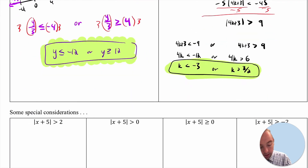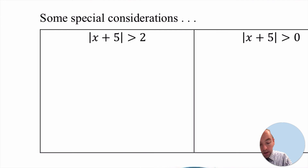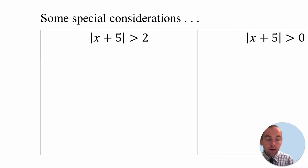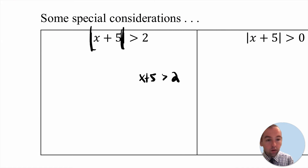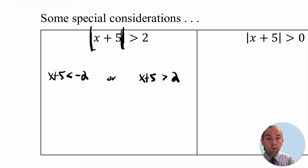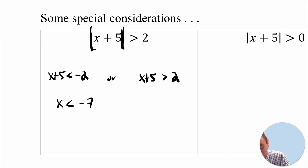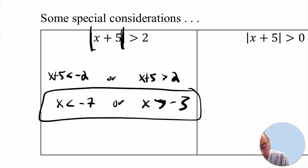Now some special cases with greater than. The first one is not different from before: the absolute value of x plus 5 is greater than positive 2. If the distance of x plus 5 from 0 is more than 2 away, then x plus 5 must be greater than 2 or less than negative 2. Subtracting 5 from both sides gives x greater than negative 3 or x less than negative 7. So x must be less than negative 7 or greater than negative 3.